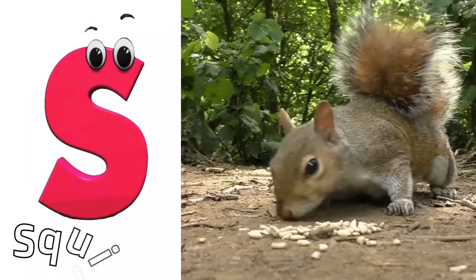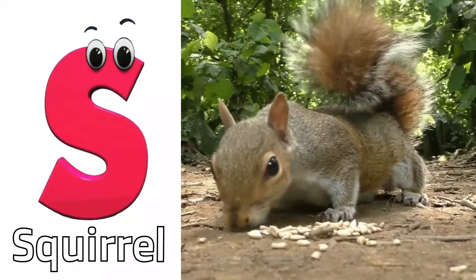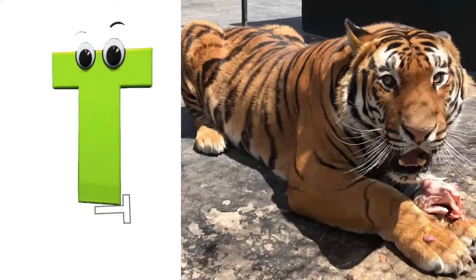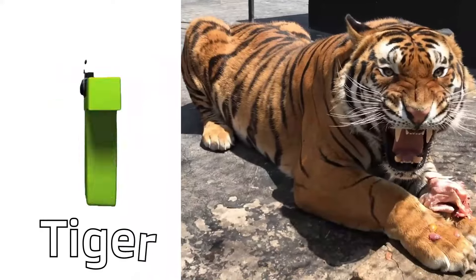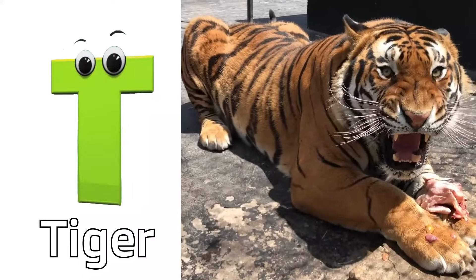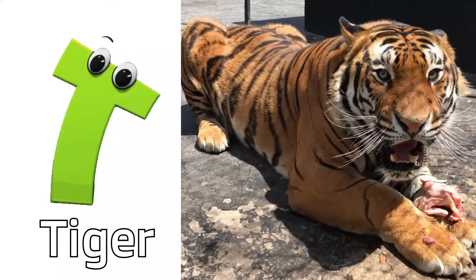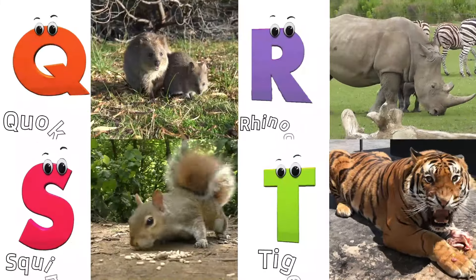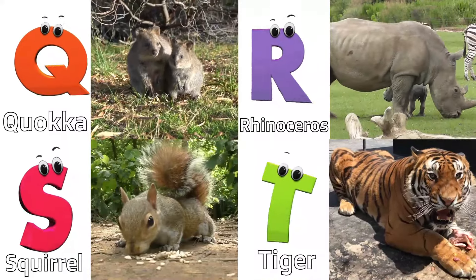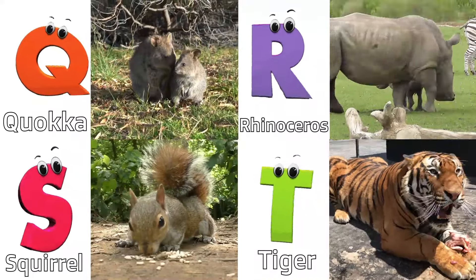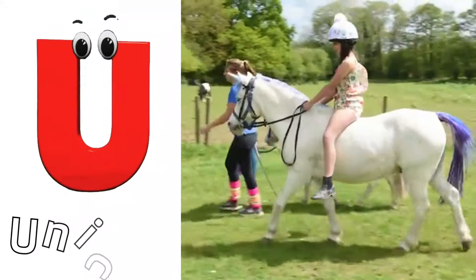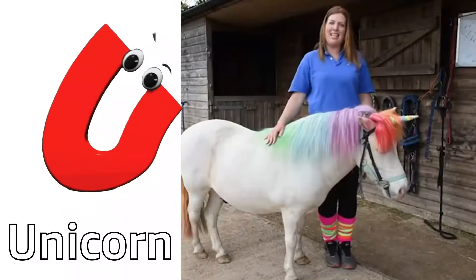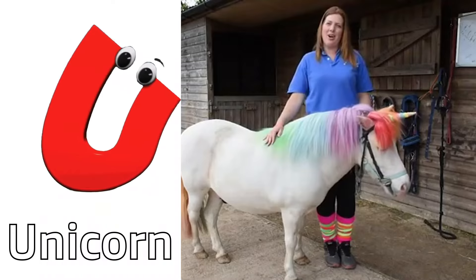S is for Squirrel. S, S, Squirrel. T is for Tiger. T, T, Tiger. U is for Unicorn. U, U, Unicorn.